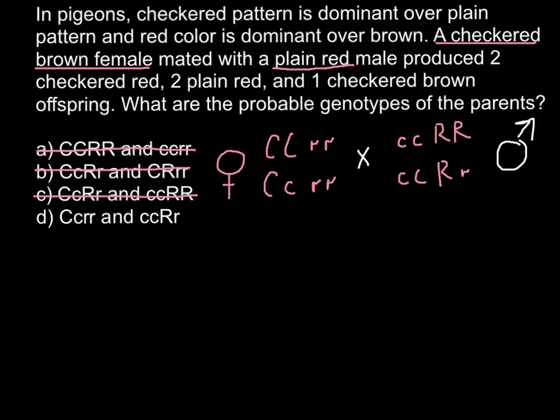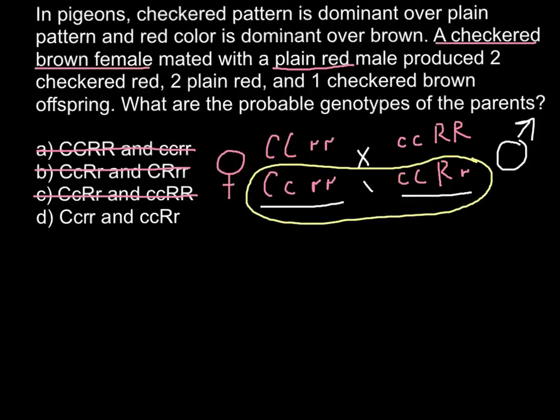Answer D is checkered brown, which is exactly this genotype here. We also have plain red, which is this genotype. This is going to be our answer - these are exactly the two genotypes we determined for answer D.